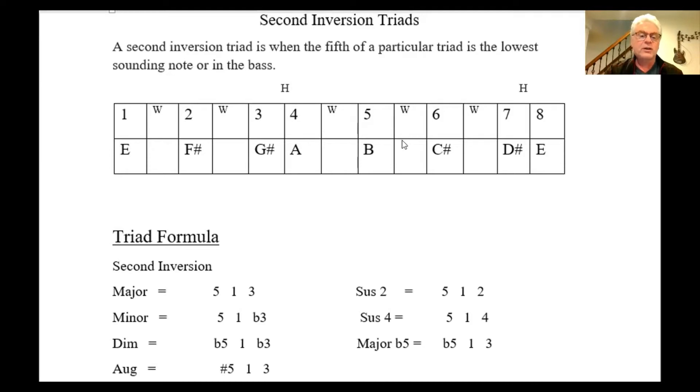Our scale degrees would be: E is our first note, F sharp is our second, G sharp is our third, A is our fourth, B is our fifth, C sharp is our sixth, D sharp is the seventh, and E is the octave or the first.